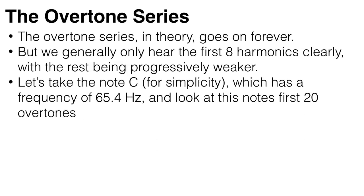The overtone series in theory goes on forever, but let's just have a look at the first 20 harmonics. We generally only hear the first eight harmonics clearly, with the rest being progressively weaker. Now let's take the note C just for simplicity — this note on the piano has a frequency of 65.4 Hertz, and it has the following harmonics.